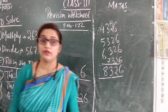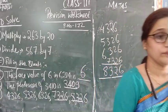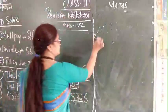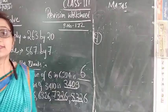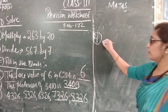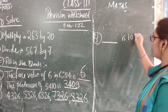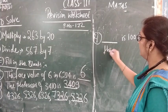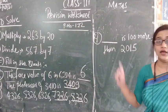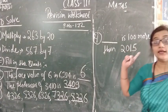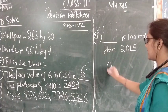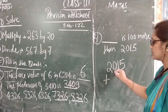So 3 fill in the blanks we have done. Now 4th one. 4th question is dash is 100 more than 2015. This is a confusing question. 100 more than. More than means here you have to add 100 to this 2015. Let us add 2015 plus 100.